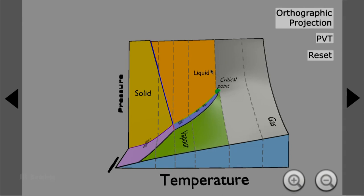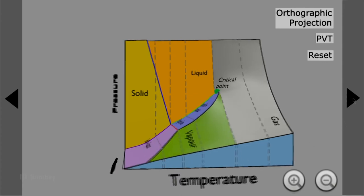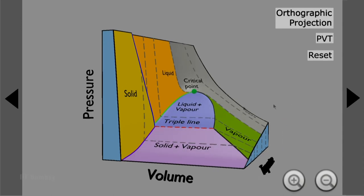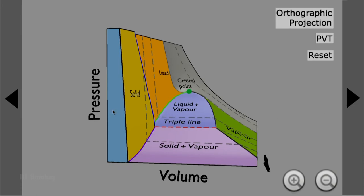From the liquid-to-gas region, which is above the critical point and above the critical pressure, there is no latent heat involved in the transition from liquid to gaseous region. There is no actual phase change — the phases are so close that one cannot possibly notice the transition from liquid phase to gaseous phase in this region. Now let us rotate this to see the diagram from the pressure-volume direction.